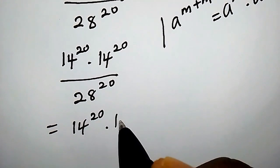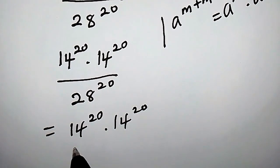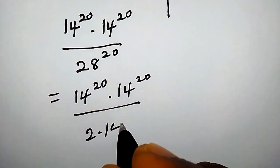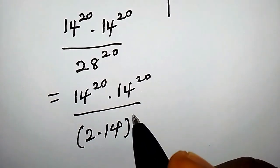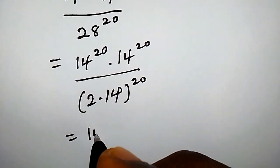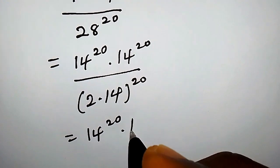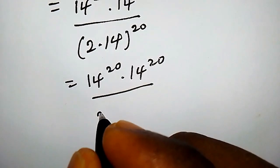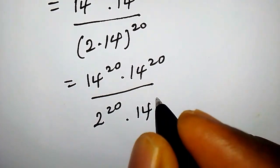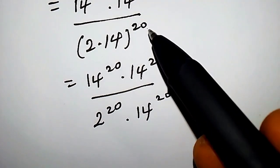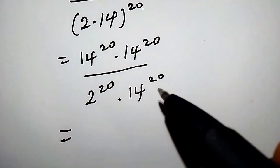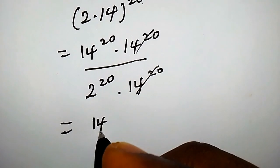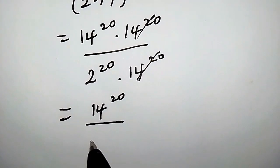Now, 28 can be written as 2 times 14, so the denominator becomes (2 times 14) to the power of 20, which expands to 2 to the power of 20 times 14 to the power of 20. We observe that 14 to the power of 20 in the numerator and denominator cancel each other, leaving us with 14 to the power of 20 over 2 to the power of 20.